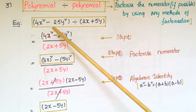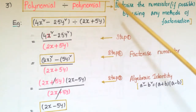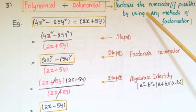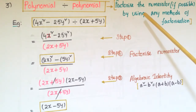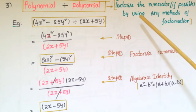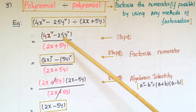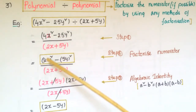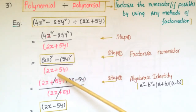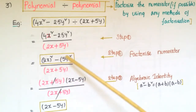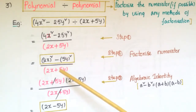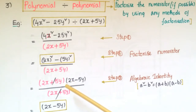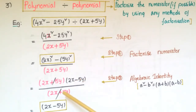Here is an example: 4x² − 25y² divided by (2x + 5y). We can factorize the numerator using algebraic identities. Observing the numerator, 4x² − 25y² can be written as (2x)² − (5y)², which is in the form a² − b² = (a+b)(a−b). So it becomes (2x + 5y)(2x − 5y) over (2x + 5y).